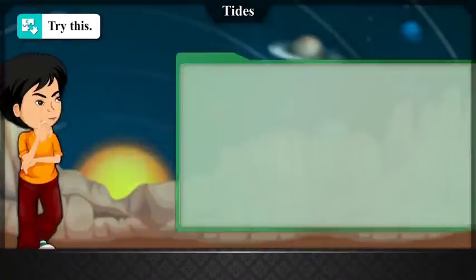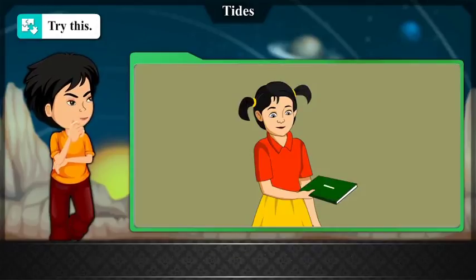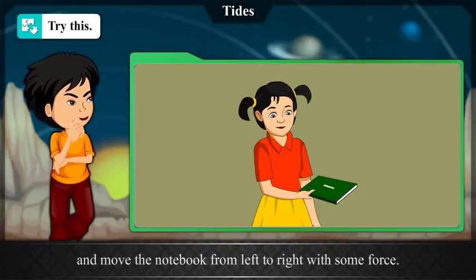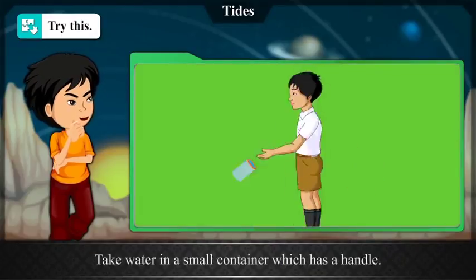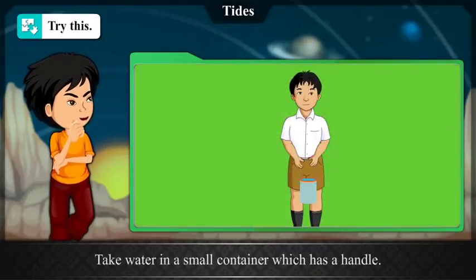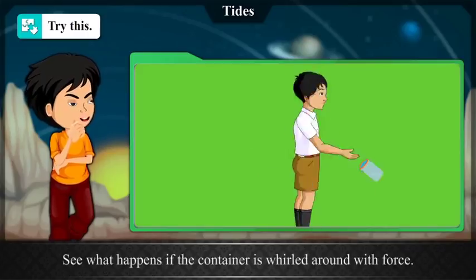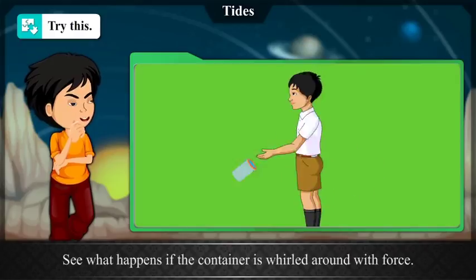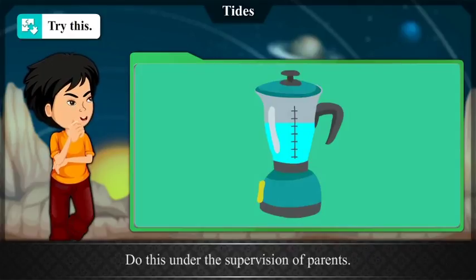Try this. Keep a small stone or a chalk piece on your notebook and move the notebook from left to right with some force. Take water in a small container which has a handle, and see what happens if the container is whirled around with force. Fill the mixer jars with water and switch on the mixer. Observe. Do this under the supervision of parents.